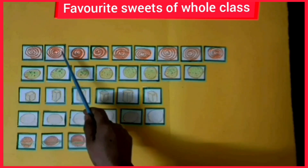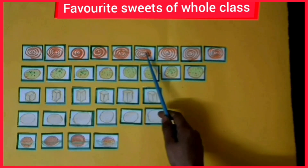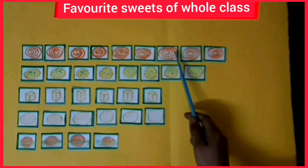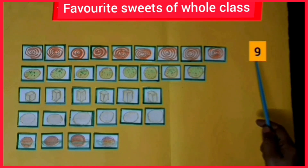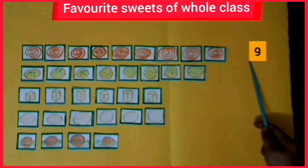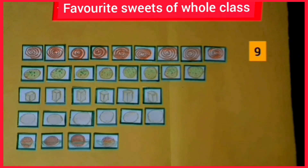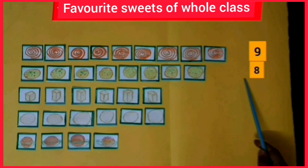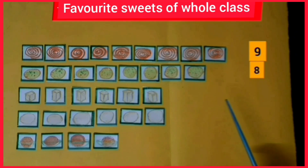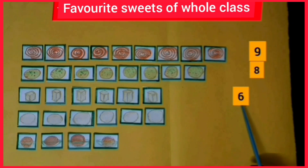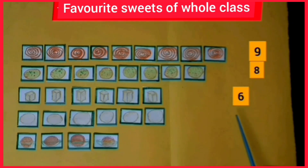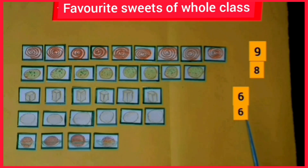Counting one through nine: nine children like jalebi. Next, laddu is liked by eight children. Barfi by six. Next is rasgulla, again by six. And gulab jamun by four children.